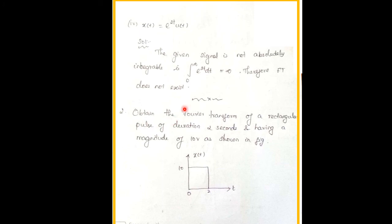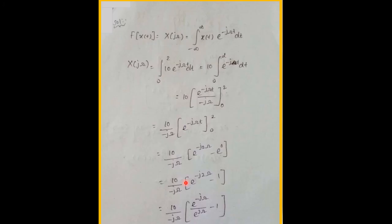Another problem: obtain the Fourier transform of a rectangular pulse of duration 2 seconds and having a magnitude of 10 volts as shown in the figure. The time duration is 2 seconds and the amplitude is 10 V. So x(t) = 10 for 0 ≤ t ≤ 2. The Fourier transform is X(jω) = integral from 0 to 2 of 10 · e^(−jωt) dt.